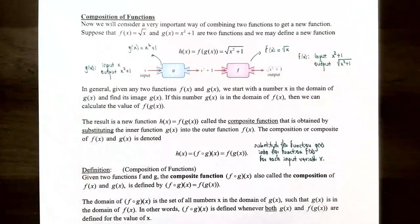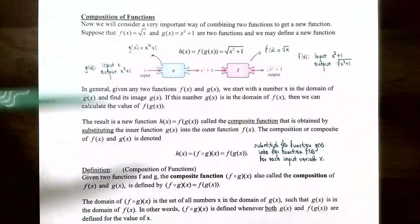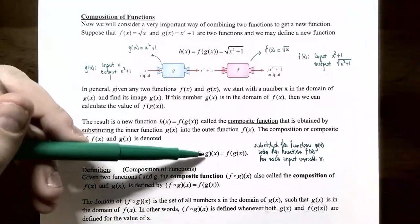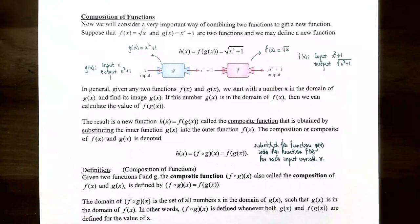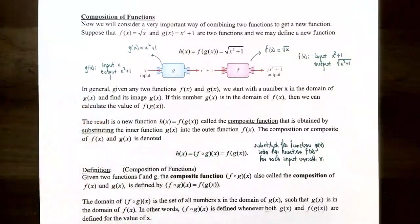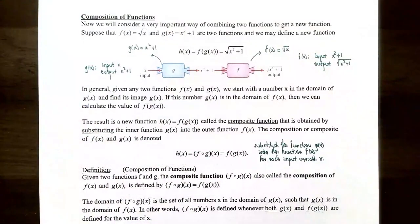This operation — substituting the inner function into the outer function — is called composition. The composite function of f(x) and g(x) is denoted h(x) = (f ∘ g)(x), which is defined as f of g(x). The order matters: f is listed first and is the outside function, g is second and is the inside function. The little circle between the two functions is the composition symbol — not to be confused with multiplication. So you input x into g first, get your output, and that output becomes the input for f.